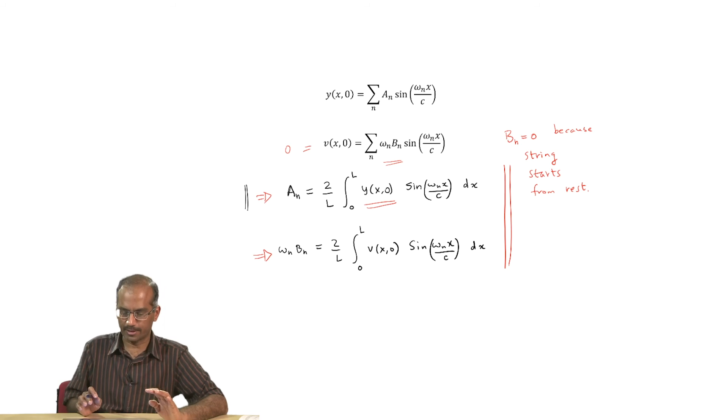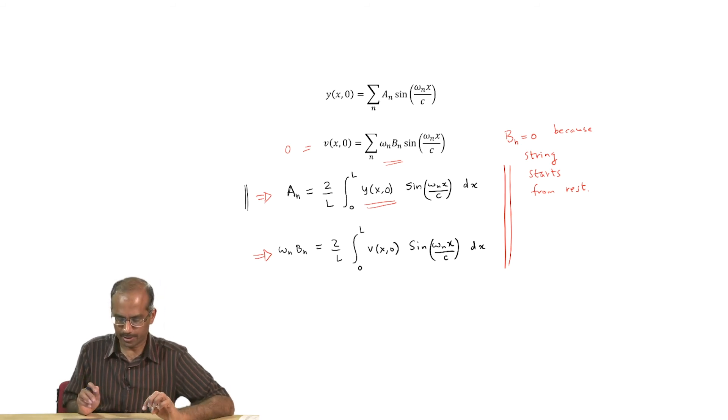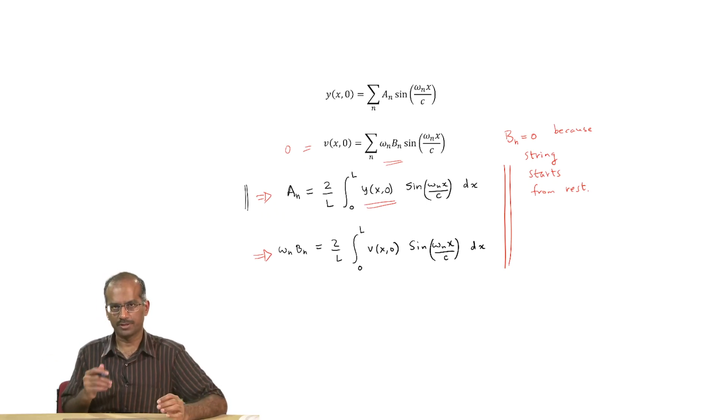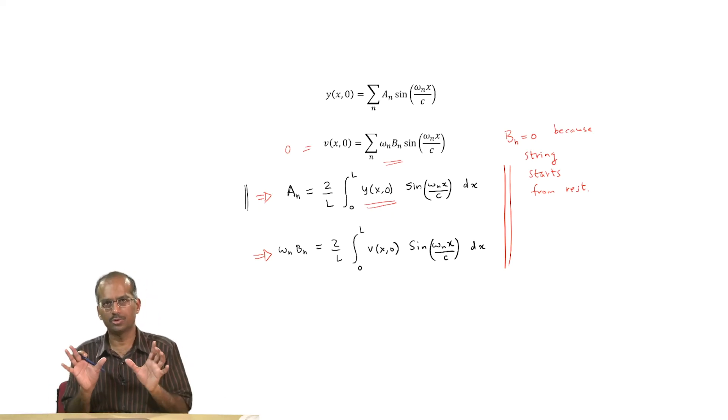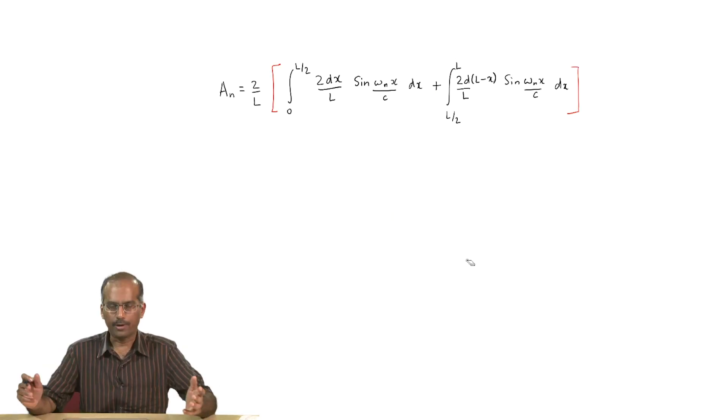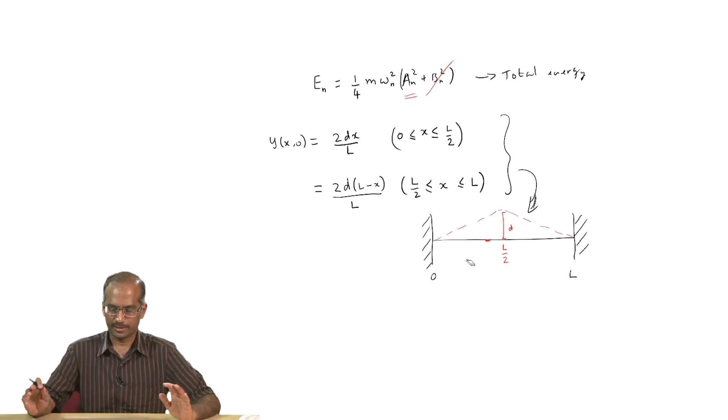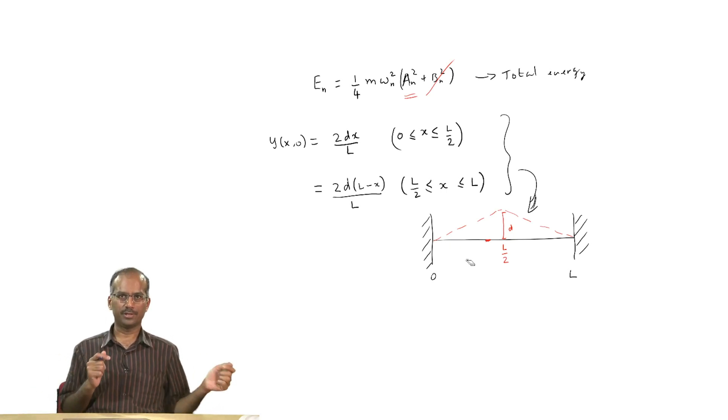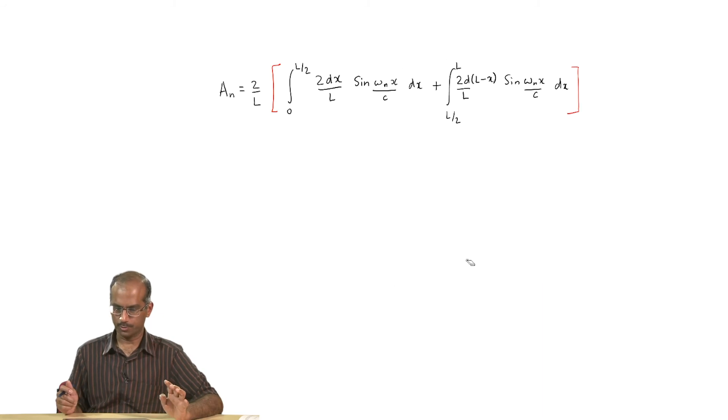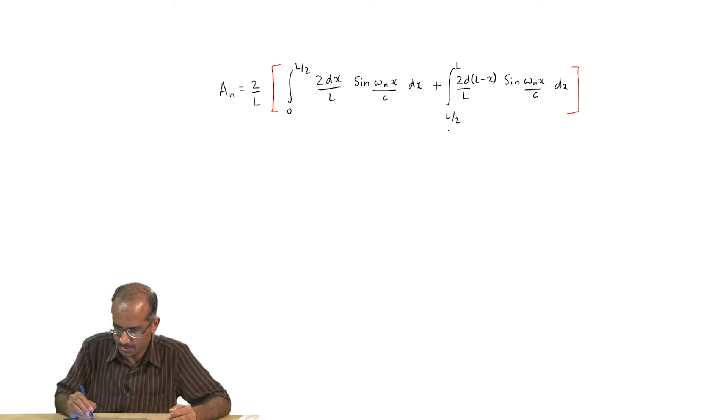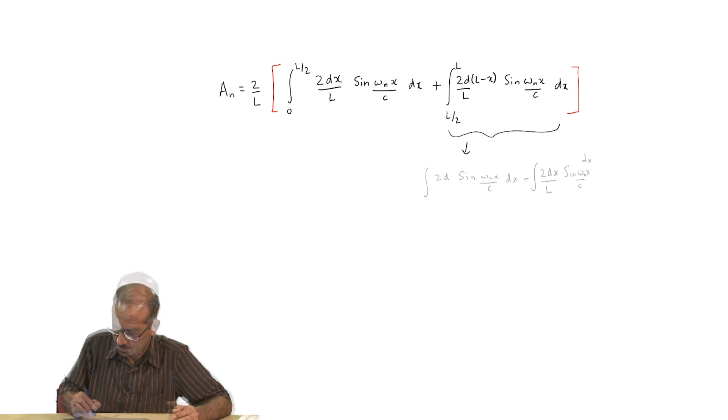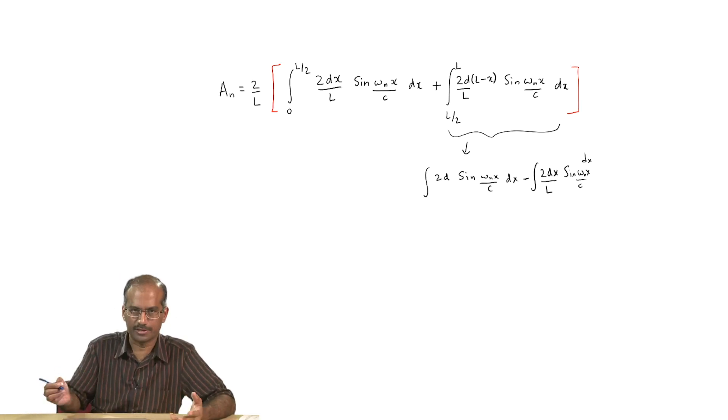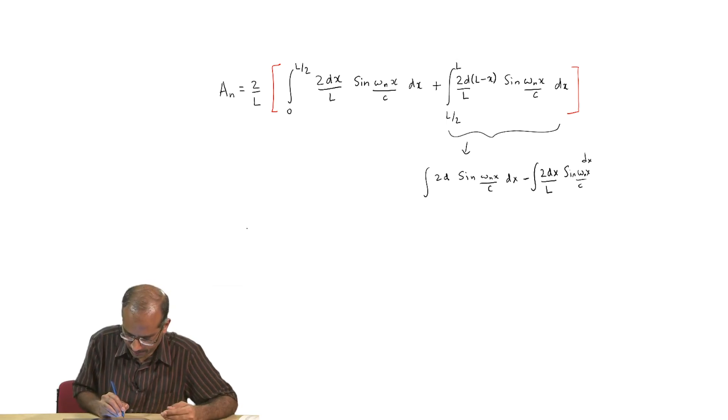To be able to do this integral we needed this y(x,0), now we have this. We can go ahead and perform the integral and obtain a_n. As you can see, the integral needs to be split into two between 0 to L/2 and L/2 to L because the functional form of y in these two regions is different. I have written the integral explicitly by substituting for y(x,0) in the correct regions: one between 0 to L/2 and other between L/2 to L. You will notice that this integral alone will split into two integrals. I urge you to do this integral; it is fairly straightforward and simple when you complete the exercise.